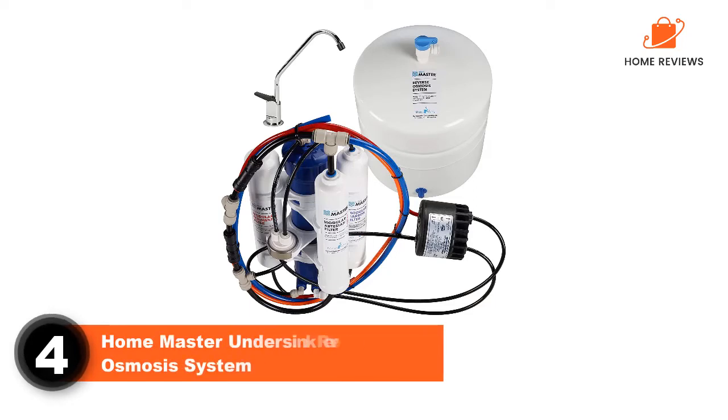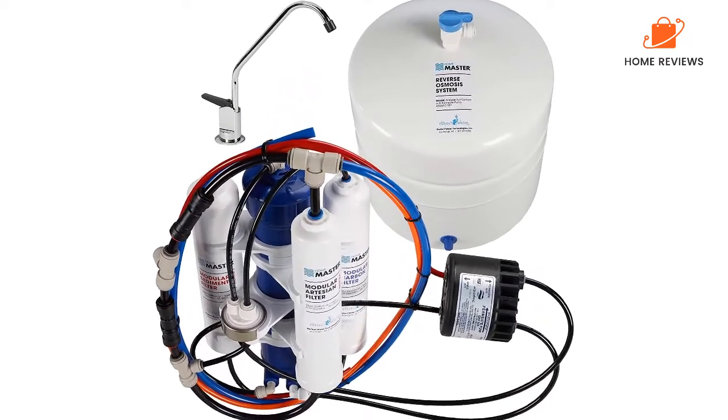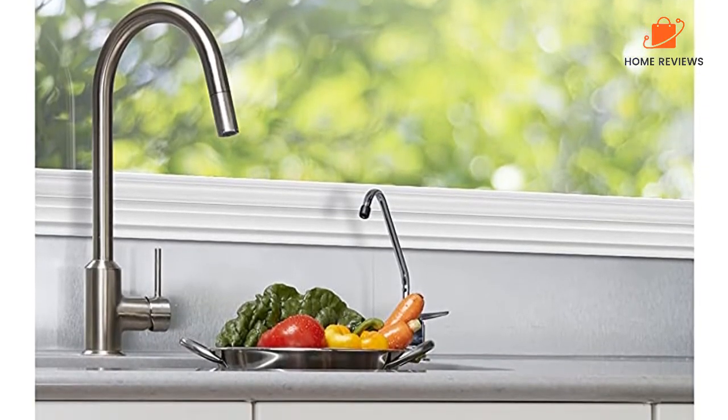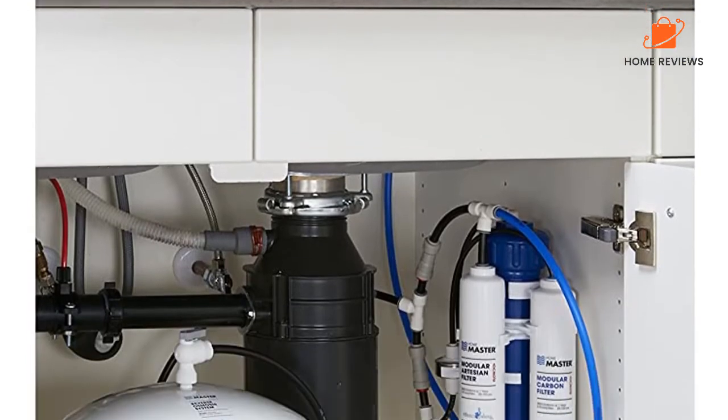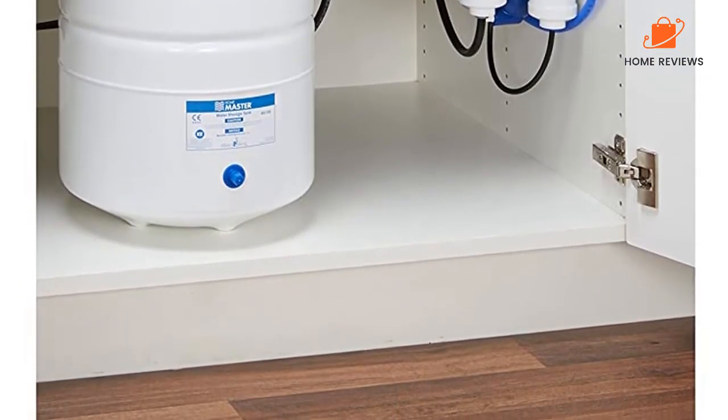Number 4: Home Master Undersink Reverse Osmosis System. Undersink reverse osmosis systems are the most popular type since the majority of the system filter housing, storage tank, and plumbing tubes is tucked away and out of view. The Home Master Artesian Reverse Osmosis System solves the tank degradation dilemma by using a full contact system.